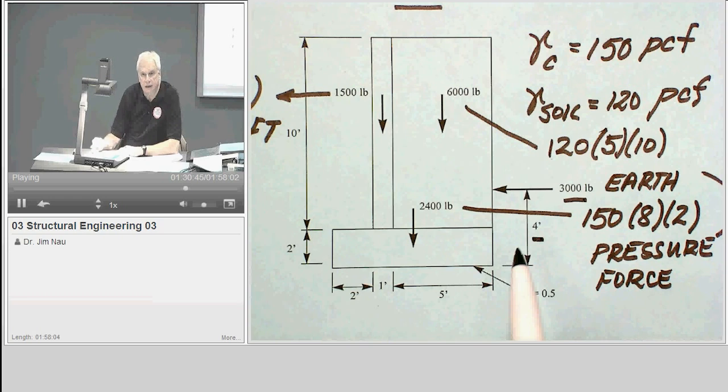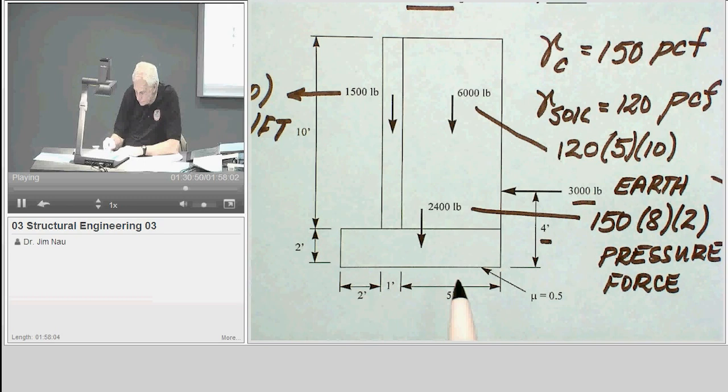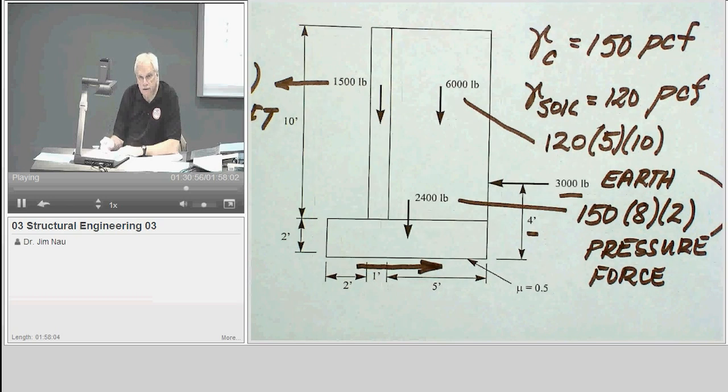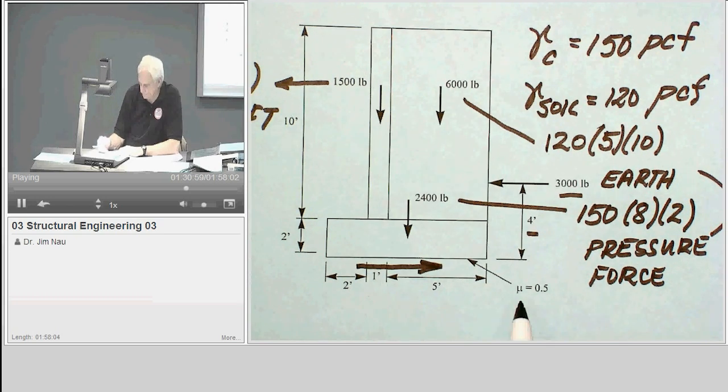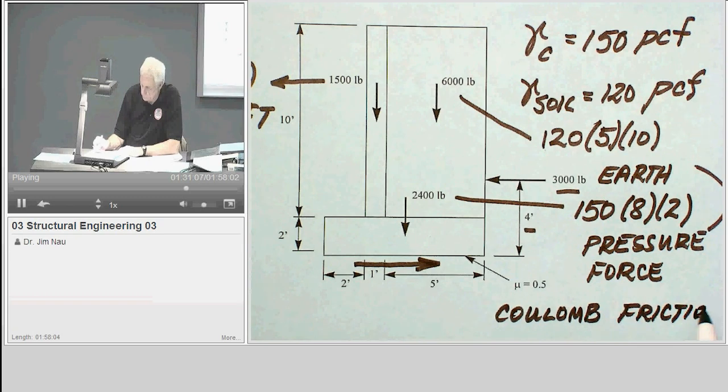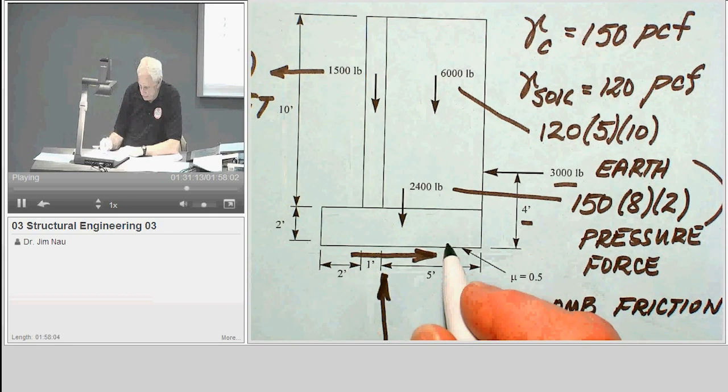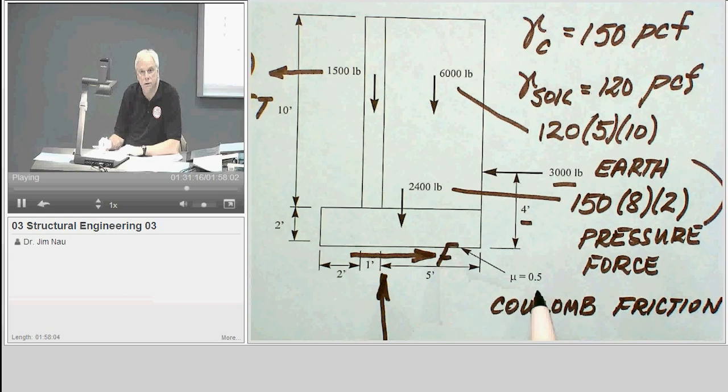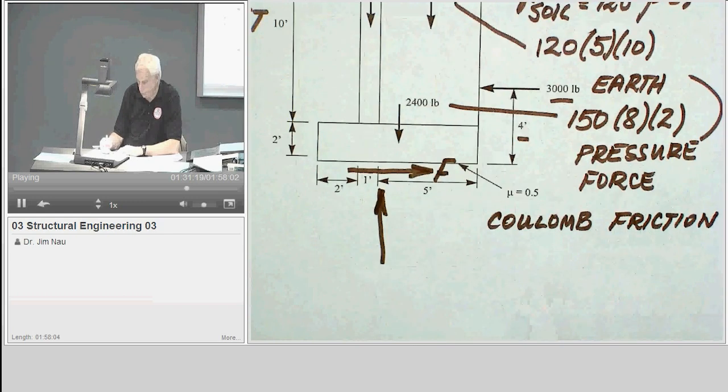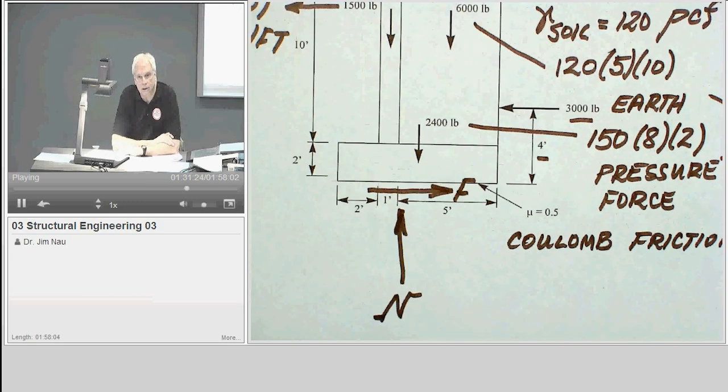So that 3,000 pound force is trying to make that whole assembly slide. So there must be a friction force here resisting that. And we calculate that friction force by just using the coefficient of friction, Coulomb friction, times the normal force. So you're going to see me calculate that friction force, which is just mu, the coefficient of friction, times that normal force. It's just like you learned in physics a long time ago in calculating basic friction force.